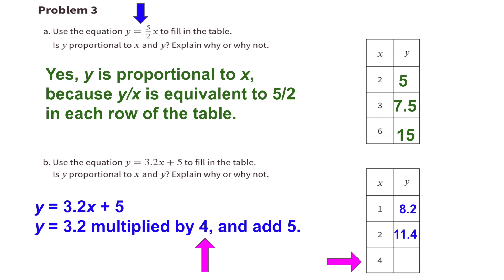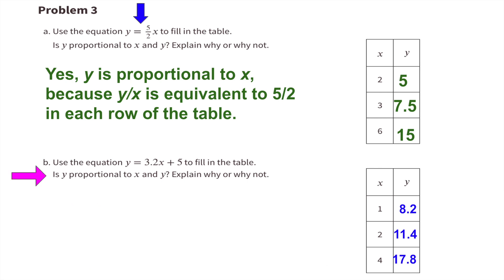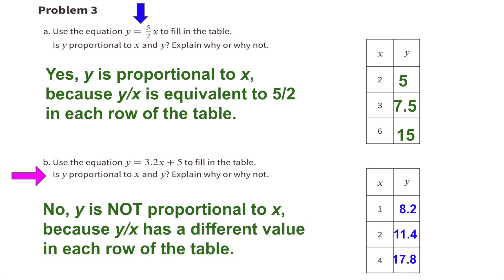When x is 4, y equals 3.2 times 4 plus 5. 3 times 4 equals 12, and 0.2 times 4 equals 0.8, so 12 plus 0.8 plus 5 equals 17.8. When x equals 4, y equals 17.8. No, y is not proportional to x because y divided by x has a different value in each row of the table.